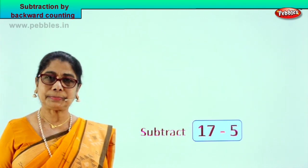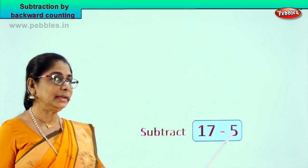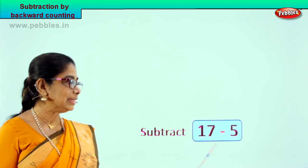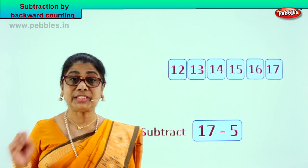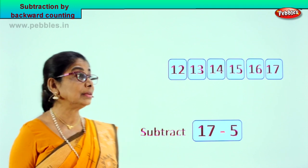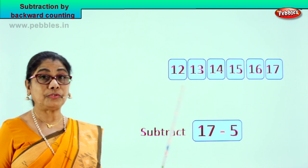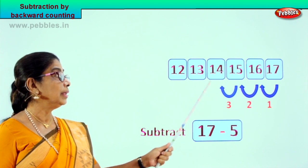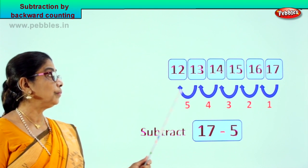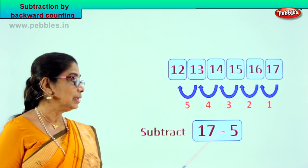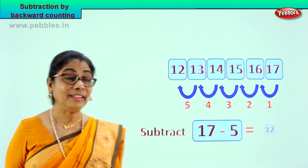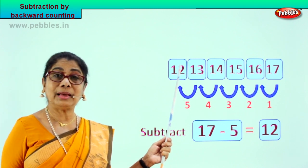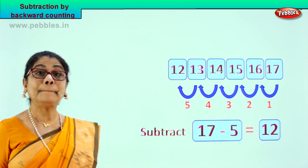Look at our problem: 17 minus 5. What is the subtraction problem given to us? 17 minus 5. You will be given 17 — go count backward 5 steps and you will come to the answer. We are going to count minus 5 — so 5 steps backward from 17: 1, 2, 3, 4, 5. And you come to the answer. 17 minus 5 is 12. Subtraction by backward counting.